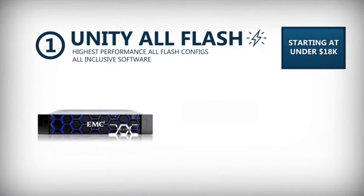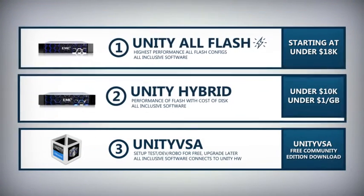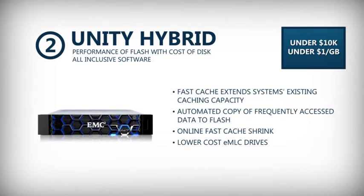Unity All-Flash leverages multi-core optimization software and is designed to be used as an all-flash system without any HDDs, bringing optimum flash performance and reliability for application workloads that require the best response times. Unity Hybrid delivers the performance of flash at the cost-effectiveness of disk, taking advantage of fully automated storage tiering for virtual pools — FastVP technology — that lowers TCO and increases efficiency by intelligently managing data placement and auto-tiering across tiers where flash serves as the performance tier.